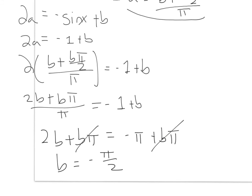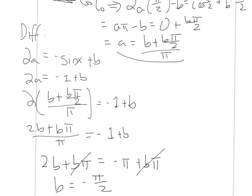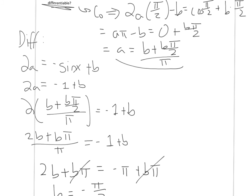So now that I know what b is equal to, I can go back up here to a and replace b. So a equals b, negative pi over 2, plus negative pi over 2 times pi over 2, all that over pi.